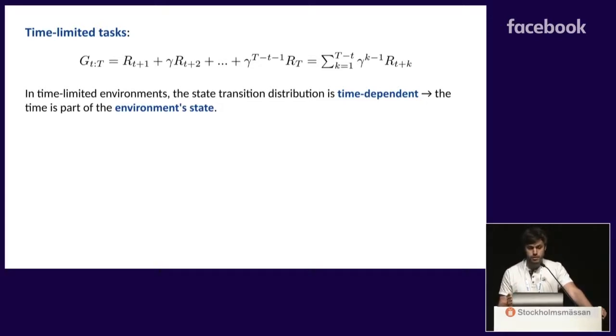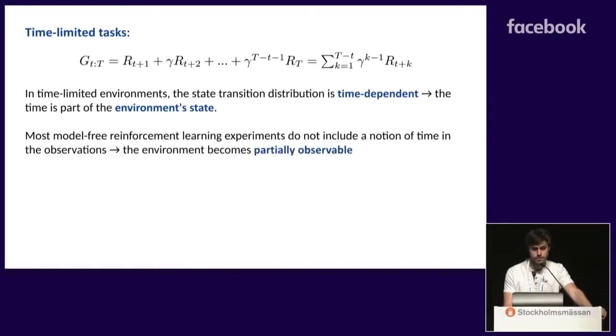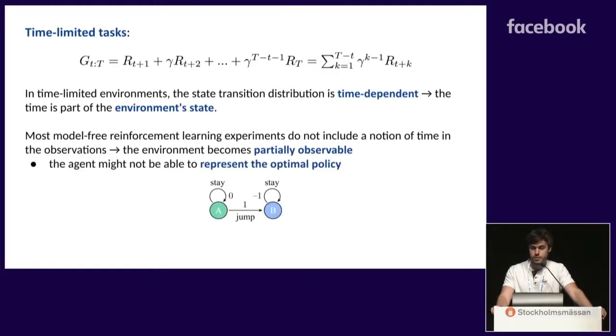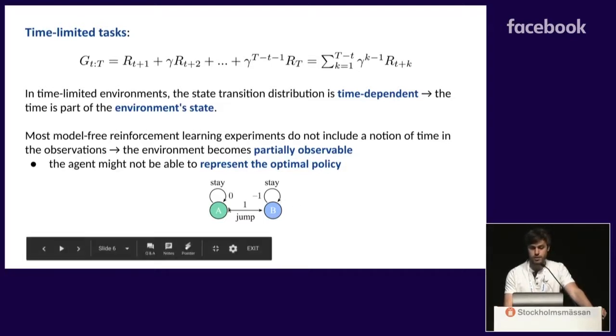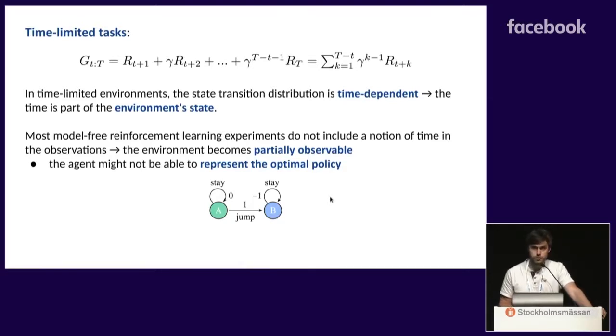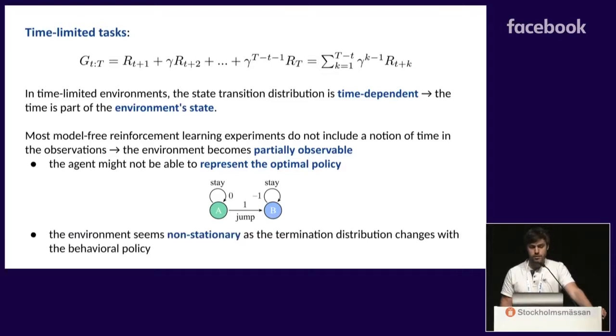However, most of the time in reinforcement learning experiments, time is not part of the observations. And this means that the environment is now partially observable. In some cases, for example, if you have a very simple task like this MDP where you have to jump just before the time limit, it's very obvious that you need time to perform well. But it's maybe less obvious that, actually, if you don't have time in your observation, the environment seems non-stationary, as the termination distribution changes with the behavioral policy.